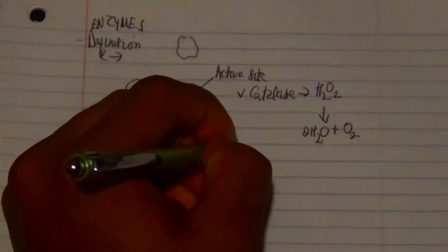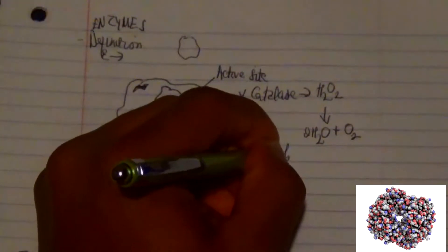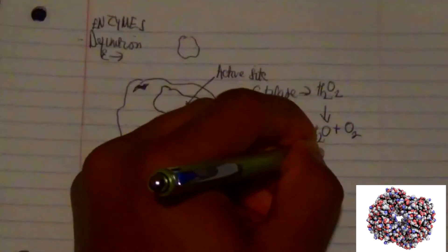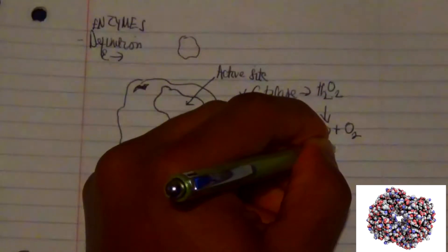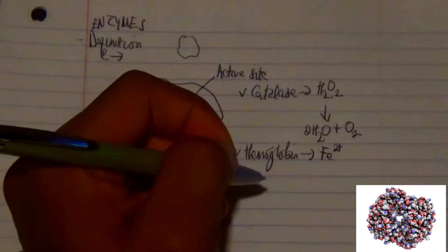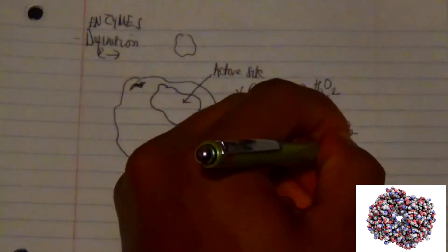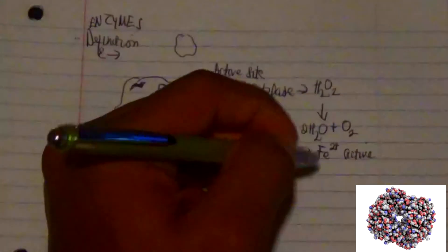However, looking at hemoglobin, which is actually in the blood, this particular protein has an Fe2+ oxidation state, which is iron 2+ oxidation state, and this particular state is known to be really active.